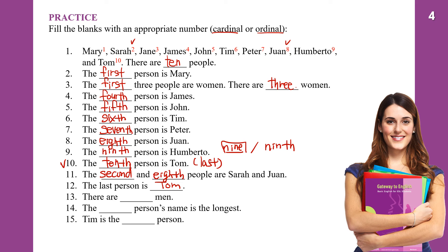There are ten people and three women, so the rest are men — there are seven men. The person with the longest name is Humberto, who is ninth — remember it's N-I-N-T-H, not N-I-N-E. The ninth person's name is the longest. And Tim is the sixth person.